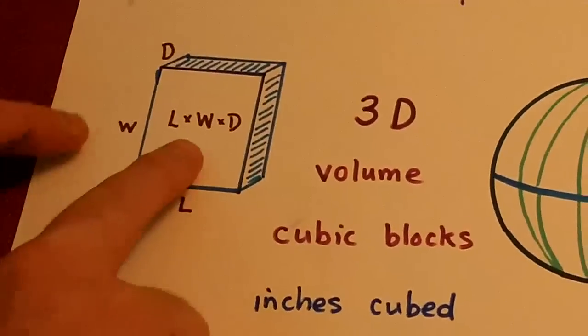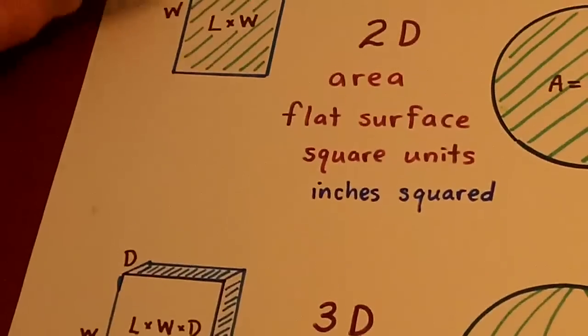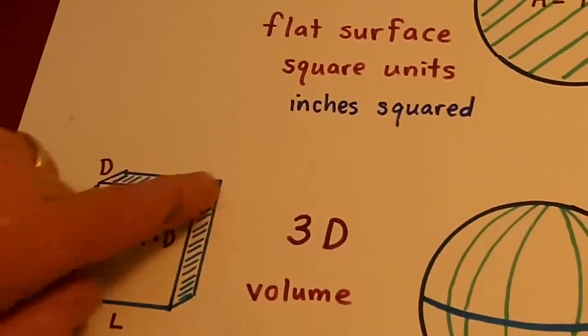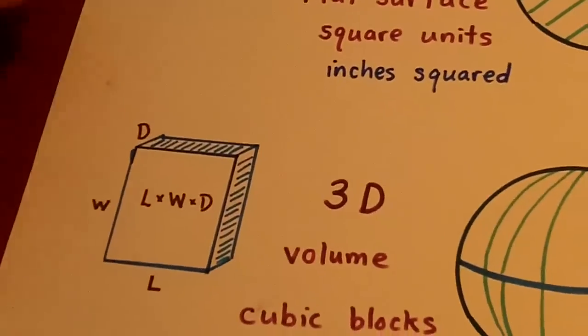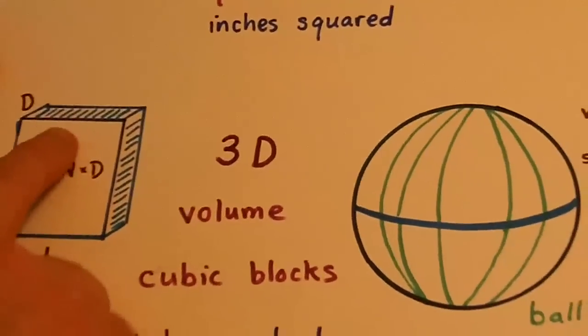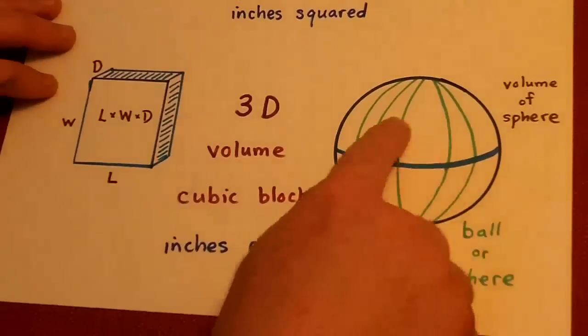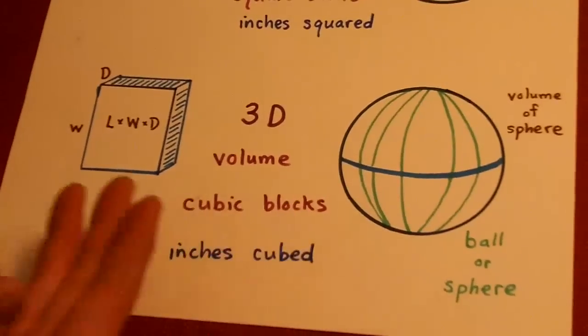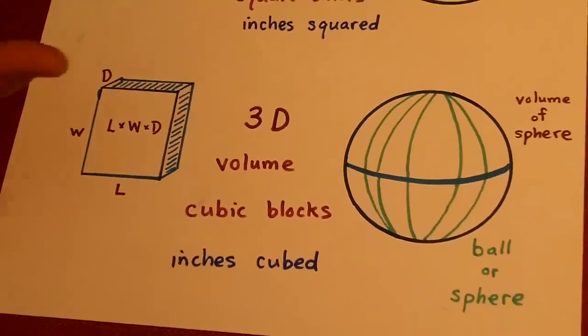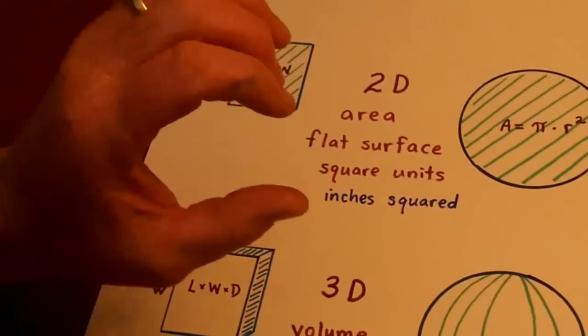And you would measure either a sphere or a box. Remember, a three-dimensional rectangle that has depth is a box. So you measure boxes and spheres or balls in cubic units, which is kind of like a square ice cube.